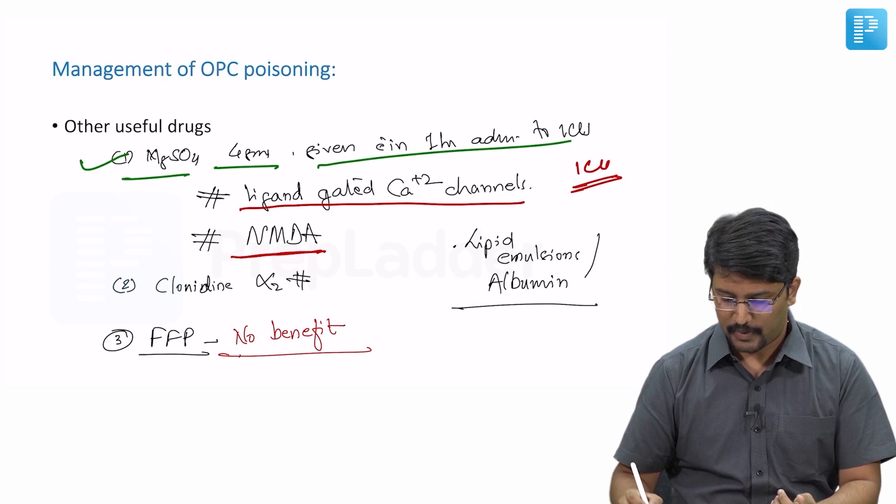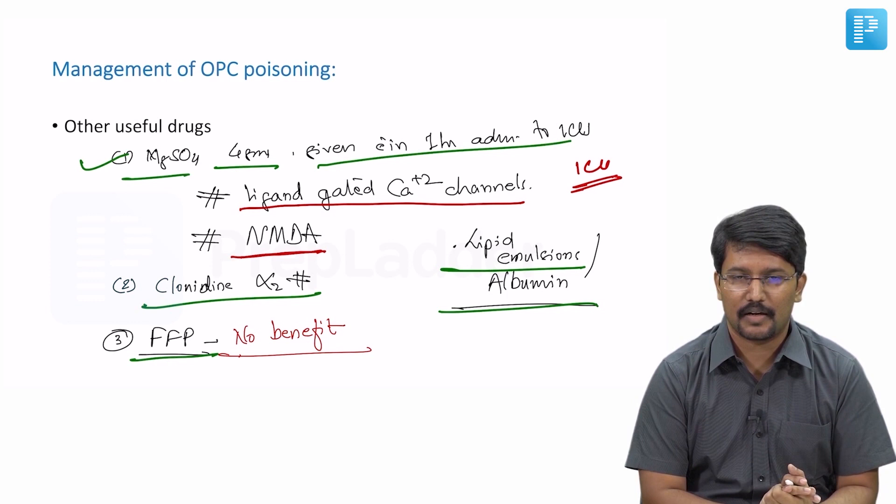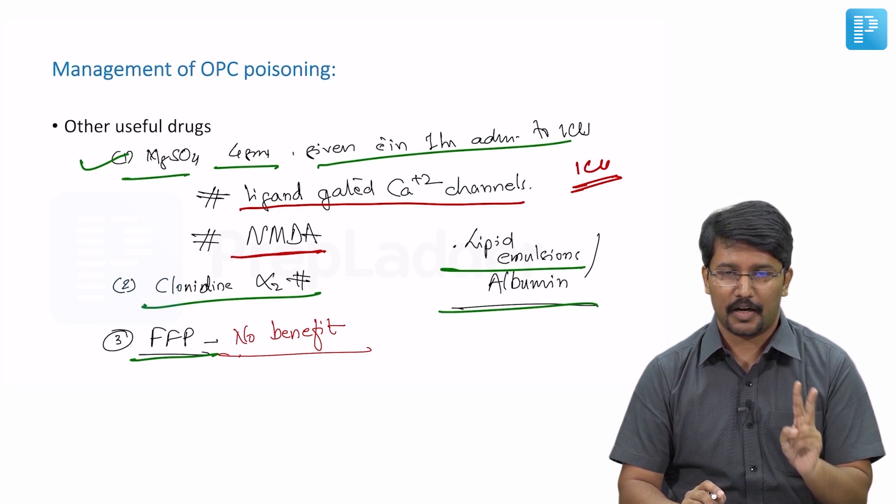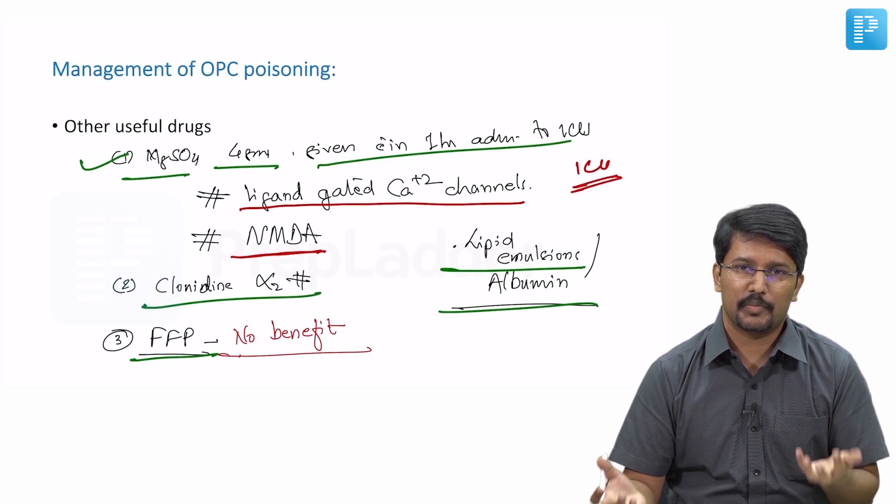Several other modalities have been tried like administration of alpha blocker clonidine or fresh frozen plasma or lipid emulsion, which show conflicting results. They show benefit in certain trials and they show no benefit or harm in certain trials. So as of now, the proven strategies include atropine, adequate supportive care, magnesium sulfate in a particular setting, and WHO continues to recommend oximes. So may be considered. Rest of the drugs can be assumed to be under trial as of now.